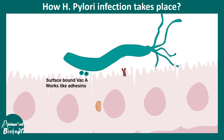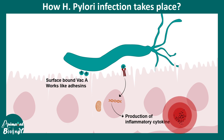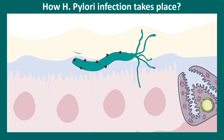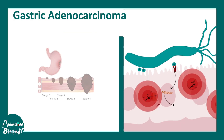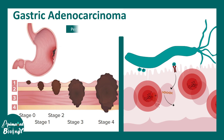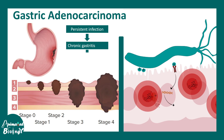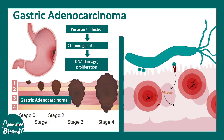These proteins work like adhesins and also alter cell signaling pathways, leading to inflammatory cytokine production. The chronic inflammation caused by prolonged H. pylori presence in the stomach can severely damage the stomach lining. This persistent infection leads to chronic gastritis, DNA damage, and proliferation, ultimately resulting in gastric adenocarcinoma.